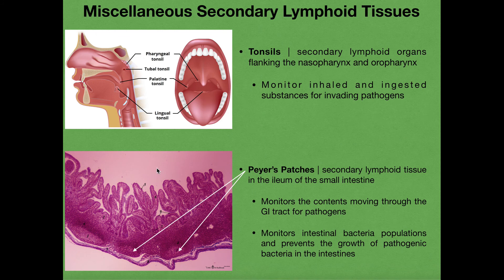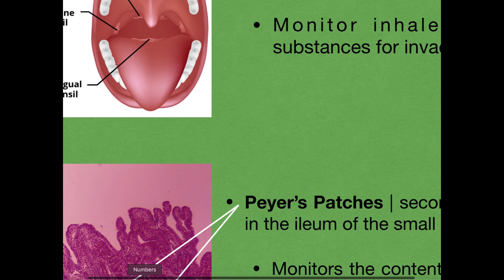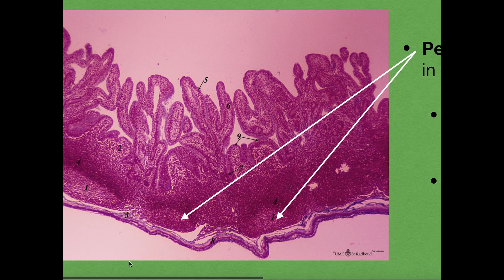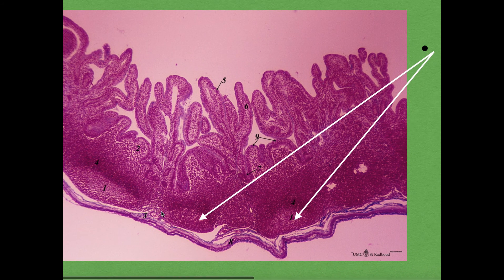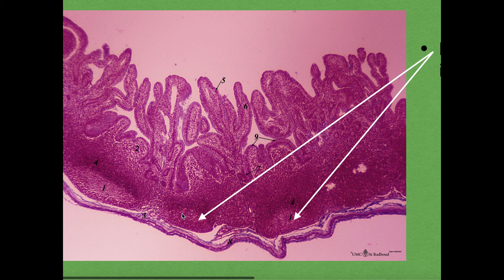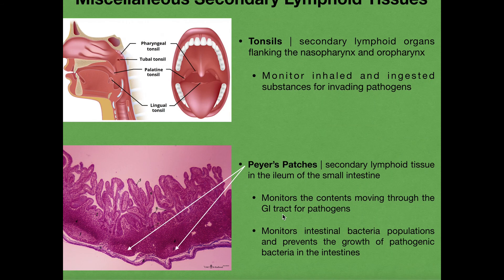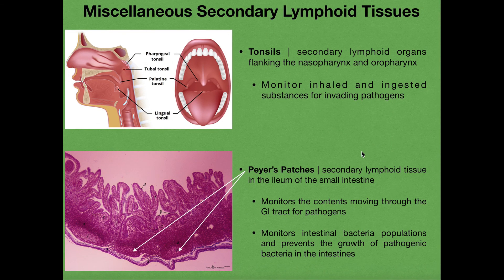The last structure we're going to talk about is Peyer's patches, which are a secondary lymphoid tissue — not an organ, they're very small and only visible under the microscope. These are present in the ileum of the small intestine. Looking at the villi of the small intestine under a microscope, deep to the villi we can see these small round patches present in the ileum. We only see Peyer's patches in the ileum region of the small intestine.